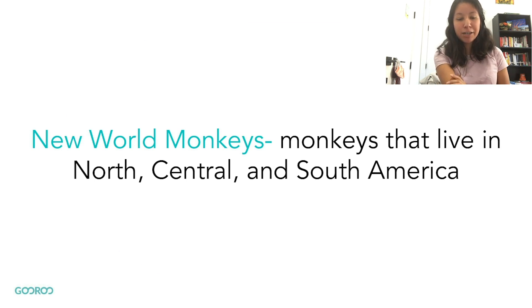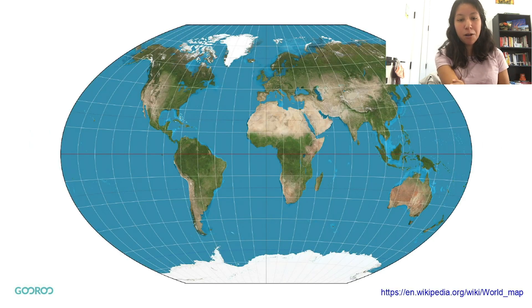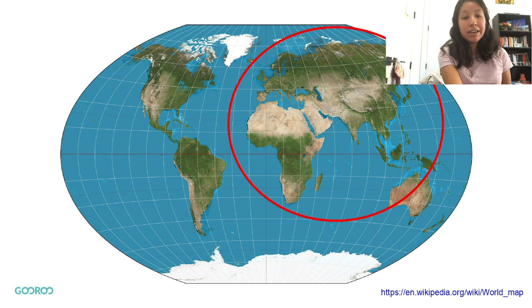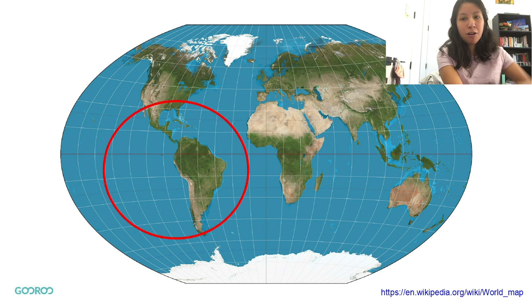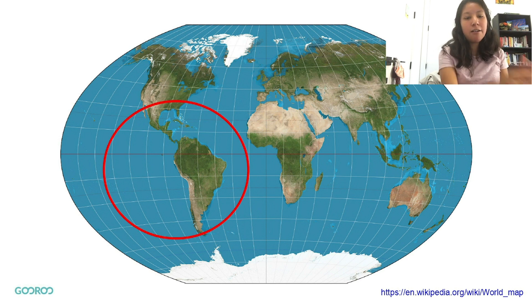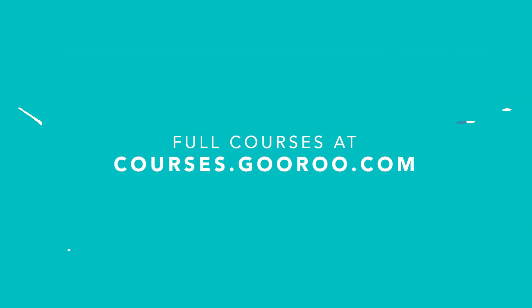If we go back to this map of the world, remember the old world monkeys lived in this area. And the new world monkeys live in the Americas. There aren't any that far north, but the border of this circle is about where monkeys start to live. And there are many that live in South America as well.